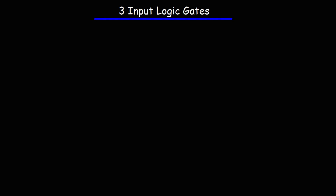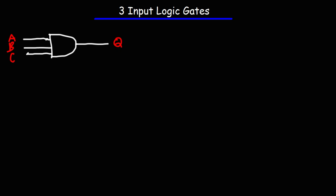In this video we're going to talk about three input logic gates. The first one we're going to talk about is the three input NAND gate. Here's a symbol for it. We'll call the three inputs A, B, and C, and the output we'll call Q. We're going to write up a truth table for this three input NAND gate.